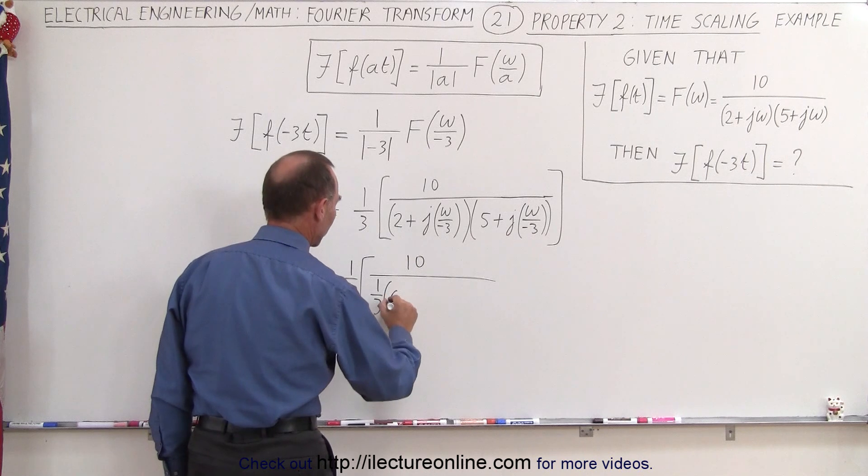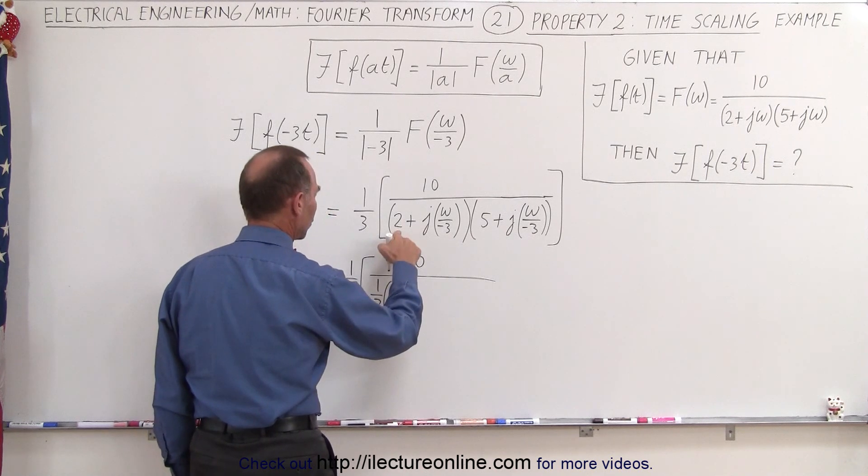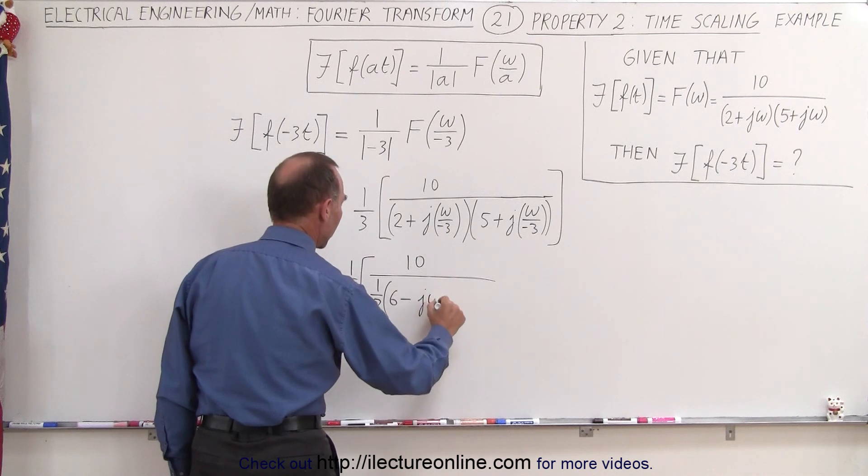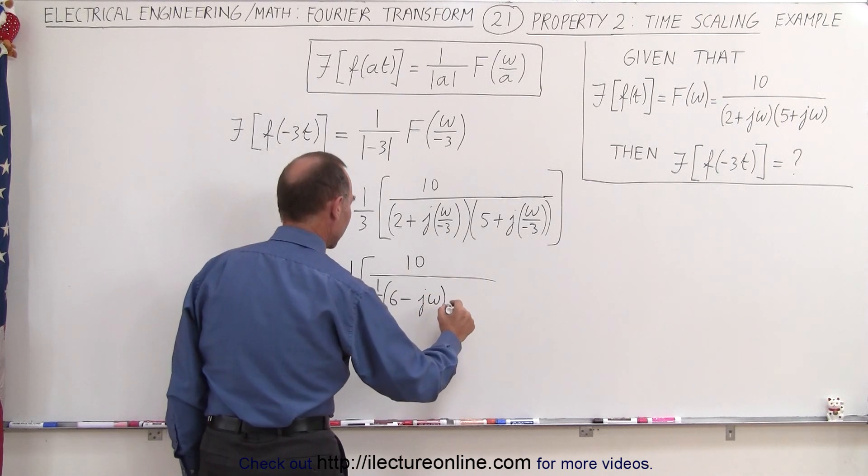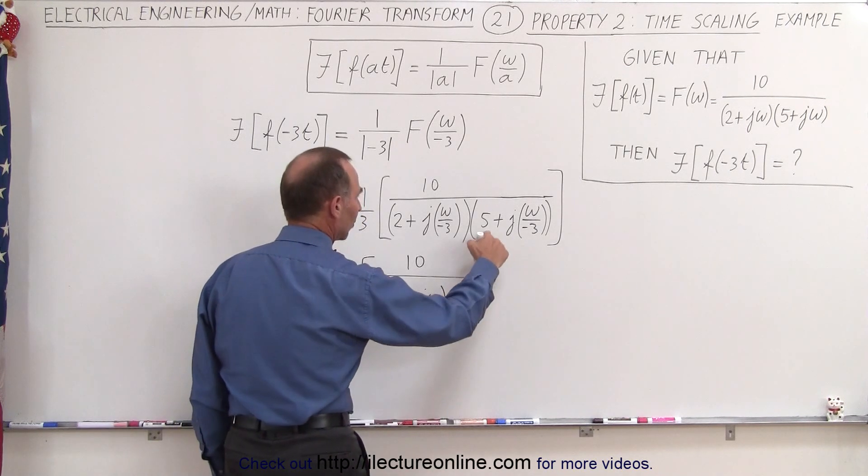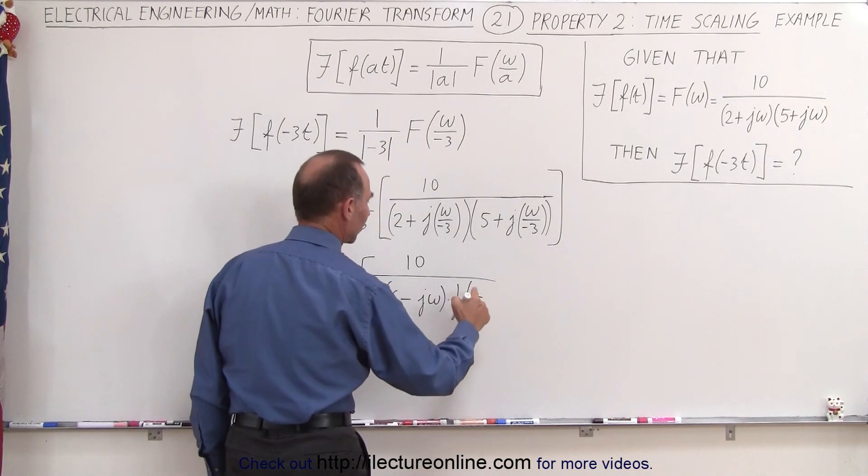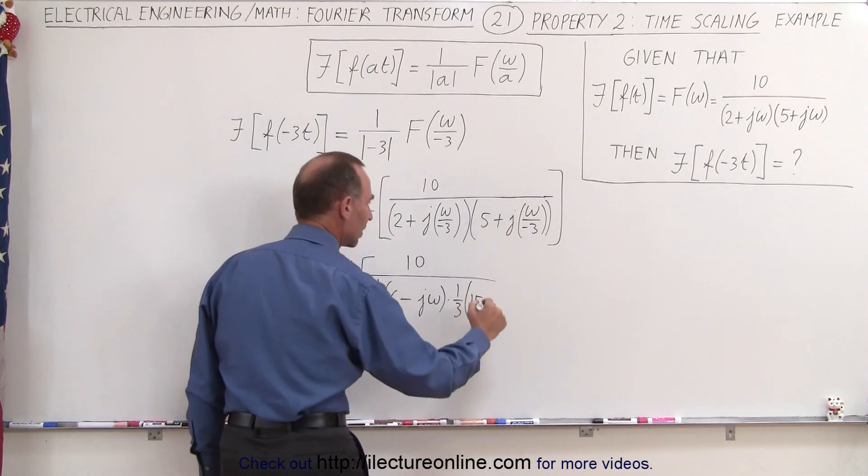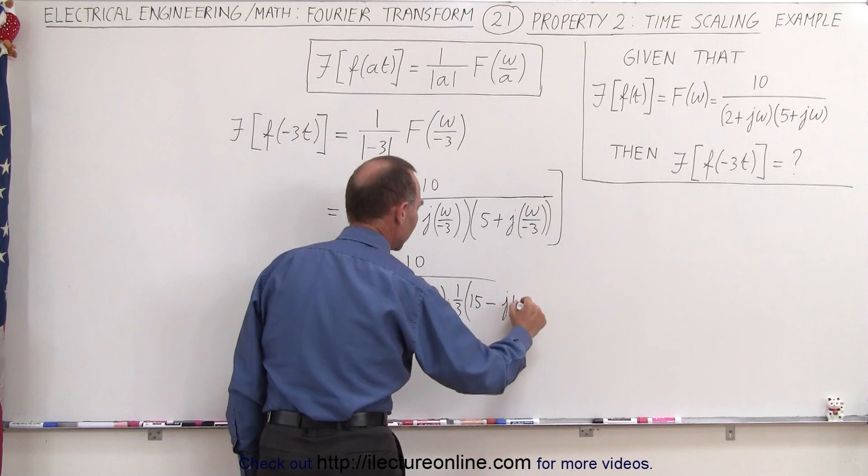Now this will have to become a 6 because 1 third times 6 gives us a 2 and then this gives us a minus j omega and then that is multiplied times again we're going to pull out a 1 over 3 times this will have to be 15 because 15 divided by 3 is 5 and that's again going to be j times omega.